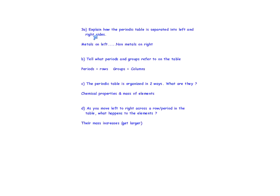Review question 3A: how is the periodic table separated into left and right sides? Metals are on the left and non-metals are on the right. Question B: what do periods and groups refer to? Periods are the rows and groups are the columns. Question C: the periodic table is organized in two ways — by chemical properties and by the mass of the elements. Question D: as you move from left to right across a period, the mass increases.